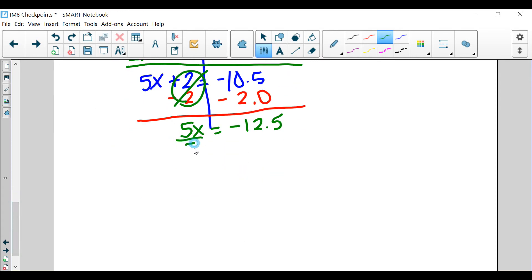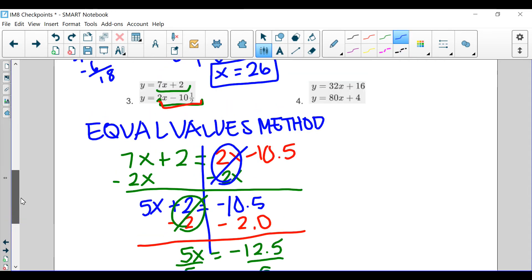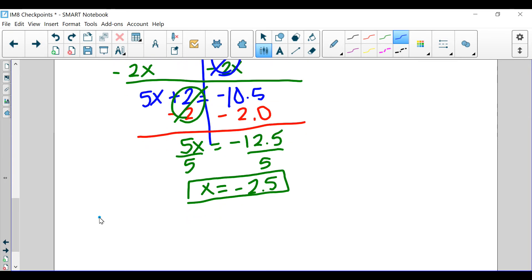We end up with 5x is equal to negative 12.5. Then, we're going to go ahead and divide by 5 here. So, we want to get rid of the x values. So, then we get x is equal to 5 divided by negative 12.5 divided by 5 is going to be negative 2.5. Now, once you find your x, you do need to find your y value. And, how do you do that? Well, our y value is actually given here. y is equal to 7x plus 2.